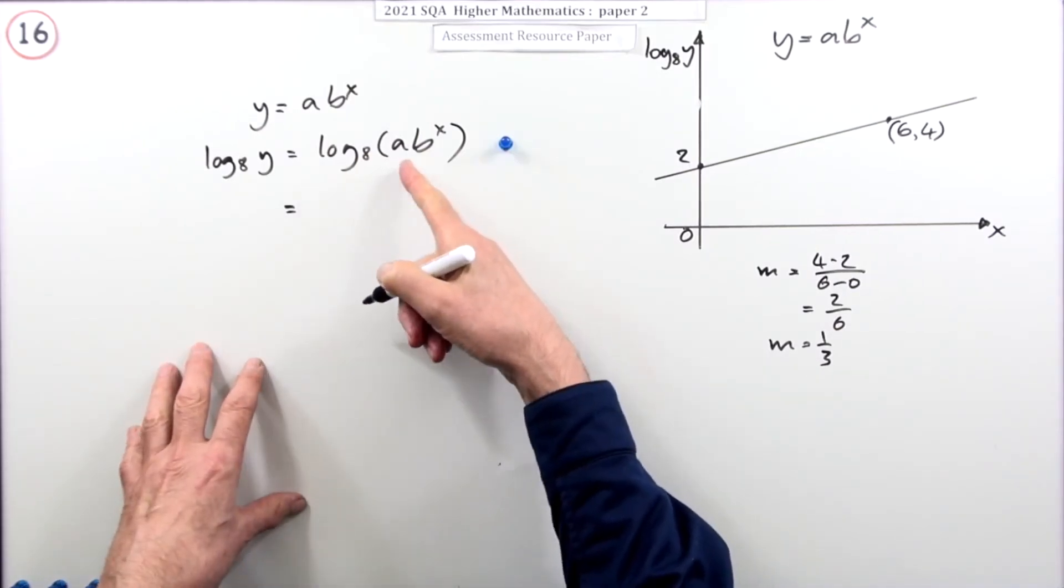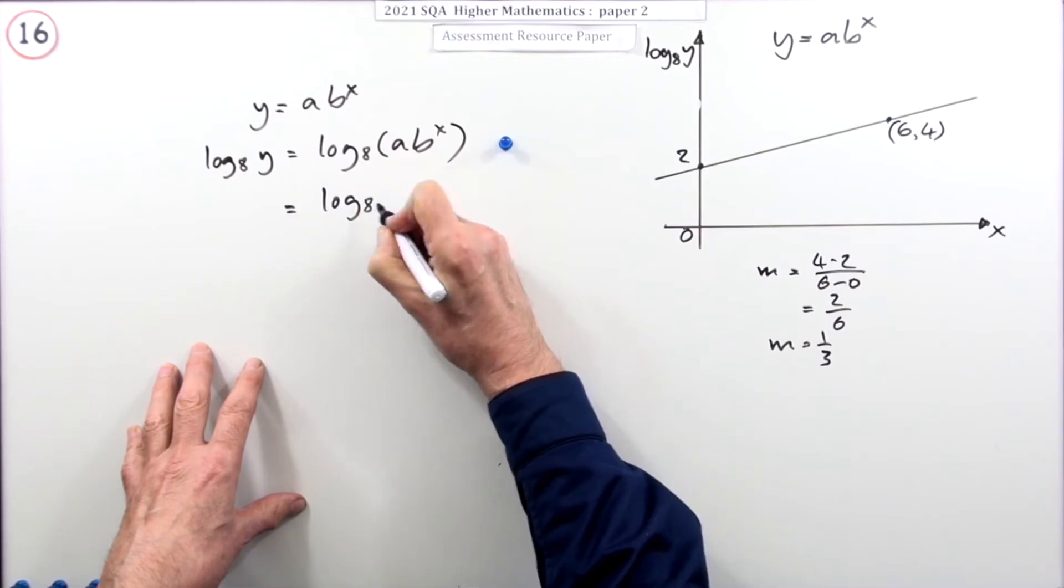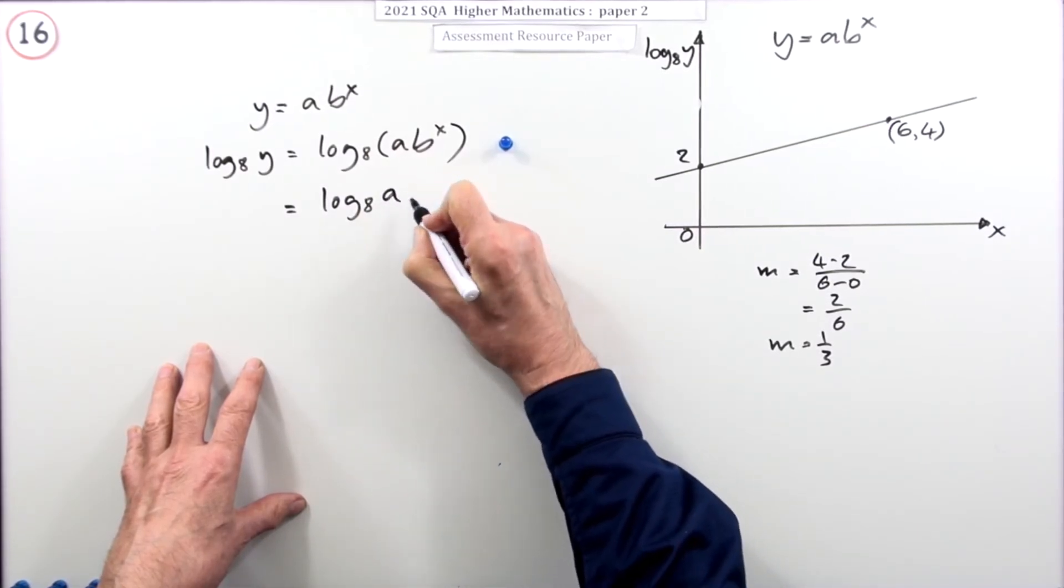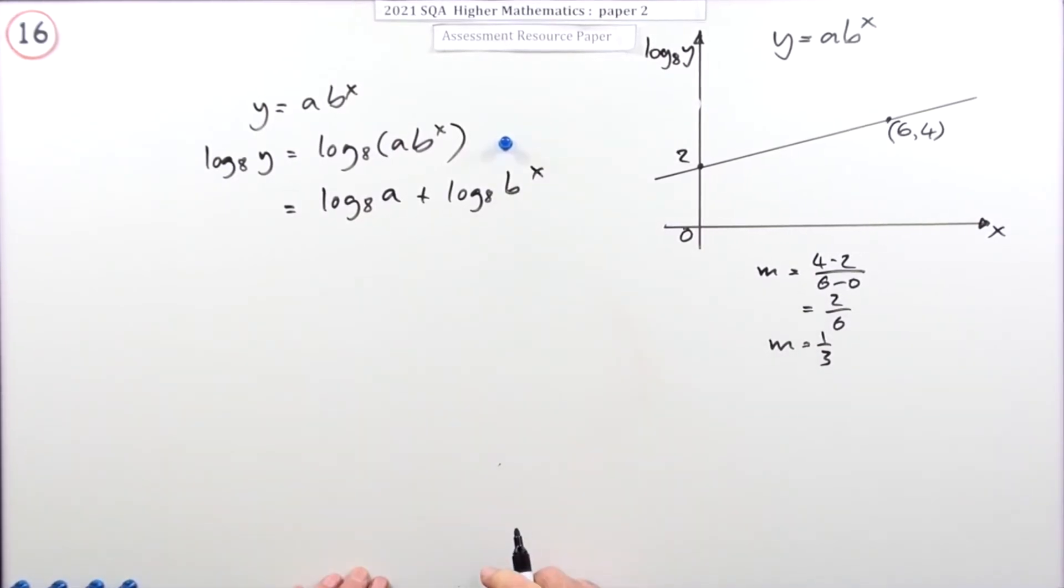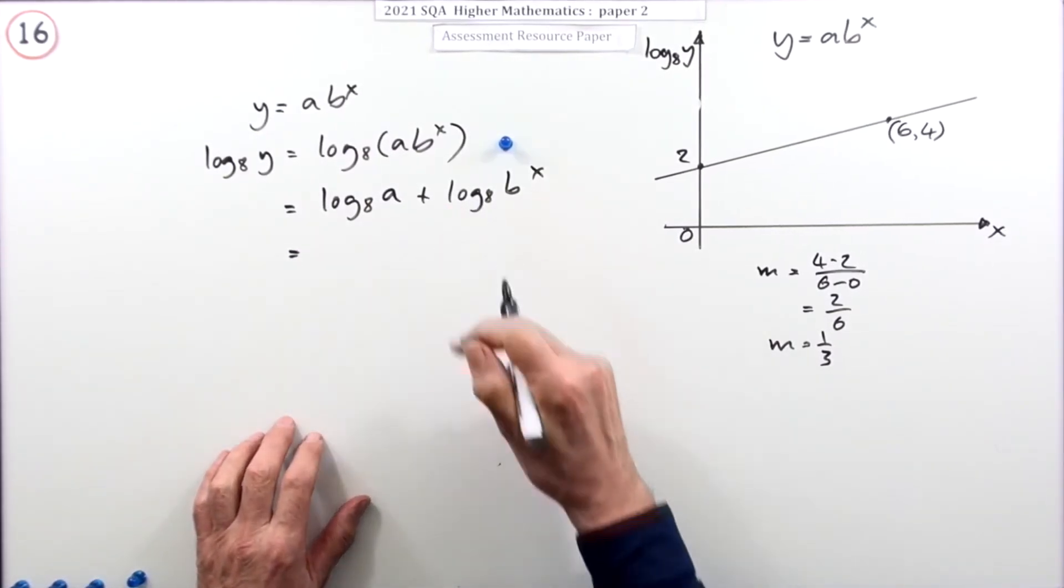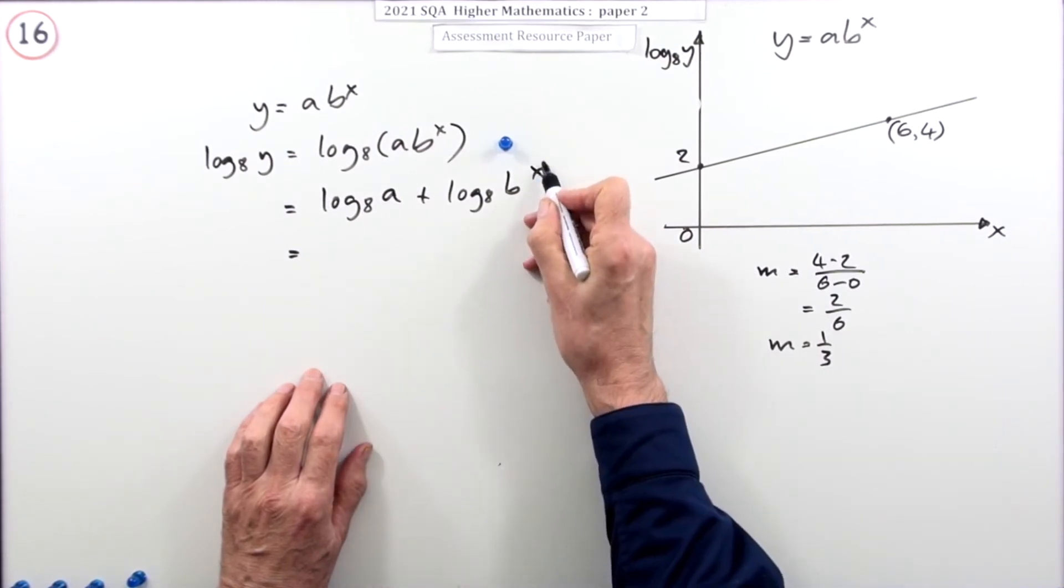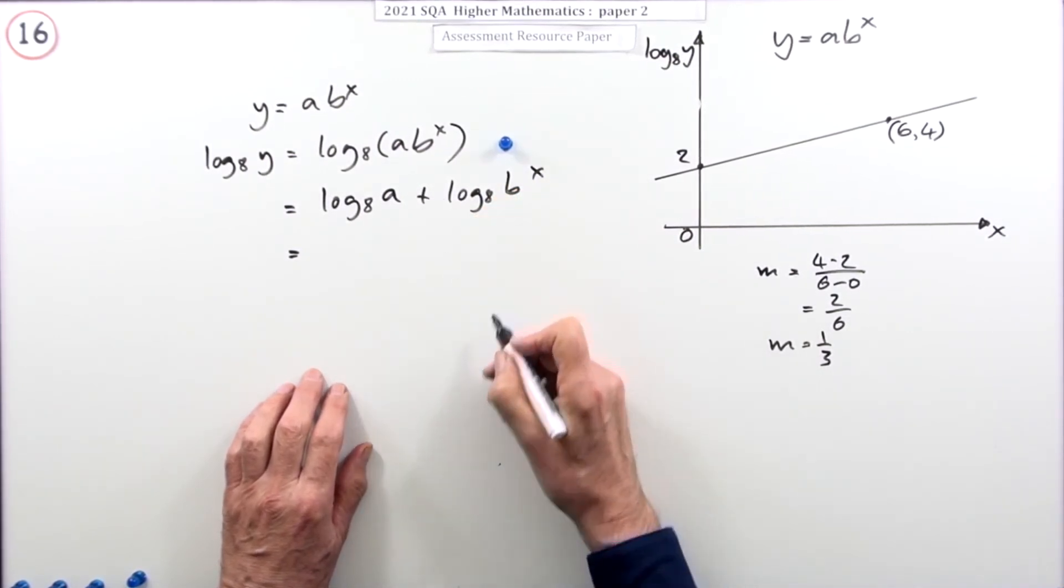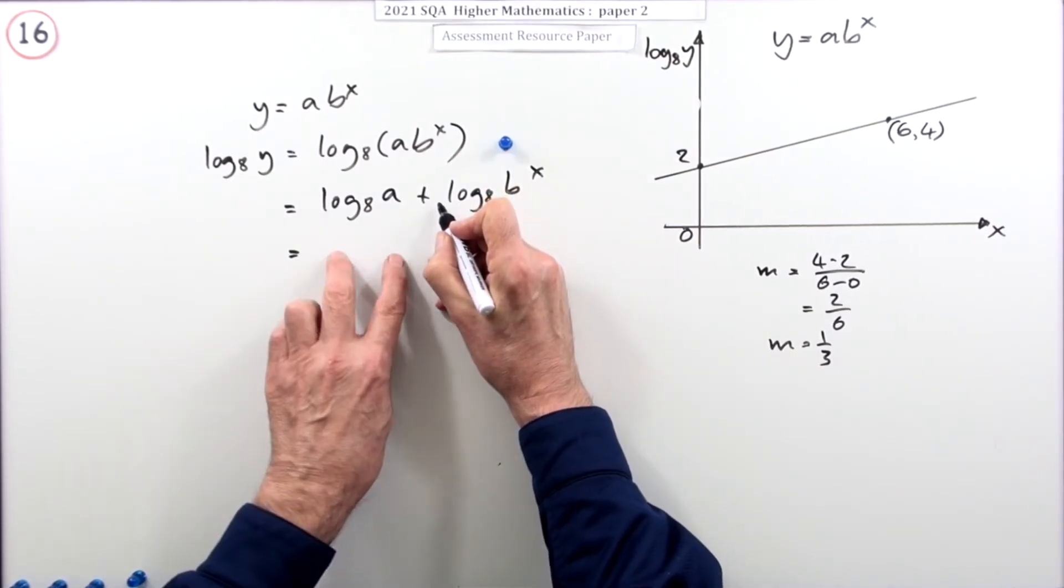So, you've got the logarithm of a product, so that must have come from the two individual sums. Log base 8 of a, plus log base 8 of b to the x. I can use, that's worth a mark, I think. No, it's not. Take the x out first. Then, you can use the law where it says if you've got a power inside, you can take it out to the front. But, this time, I think I'll take that to the front here, and rewrite it over here. So, what you've got is x. It's a wee bit backward writing this, though. Log base 8 of b, plus log base 8 of a.